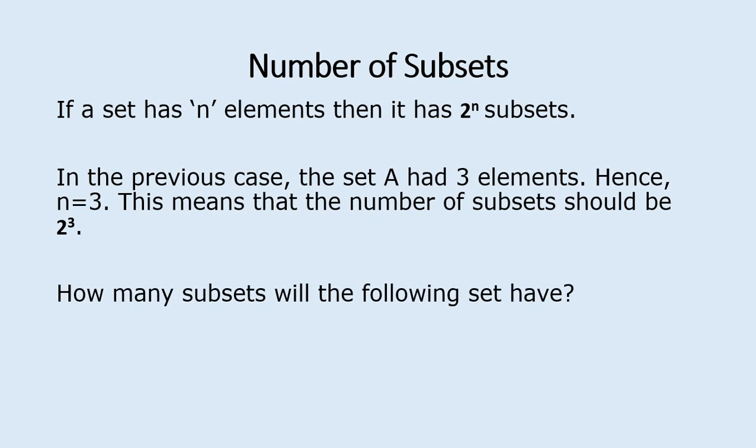How many subsets will the following sets B and C have? Go ahead and try that — you can pause the video. Set B has four elements, so it will have 2^4 = 16 subsets. Set C has two elements, so it will have 2^2 = 4 subsets. You can go ahead and list all the subsets of B and C.